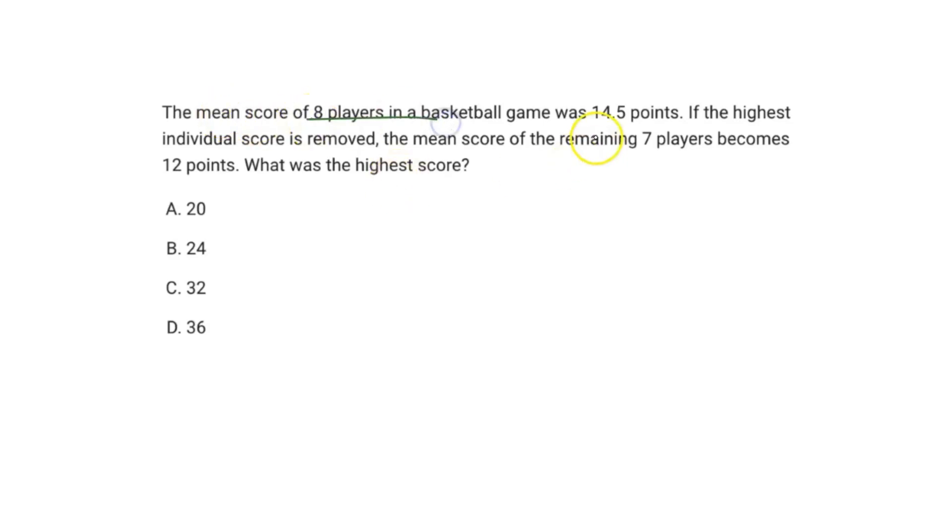The mean score of eight players in a basketball game was 14.5 points. If the highest individual score is removed, the mean score of the remaining seven players becomes 12 points. What was the highest score? So the person that scored the most points in the game, how many points did they score?